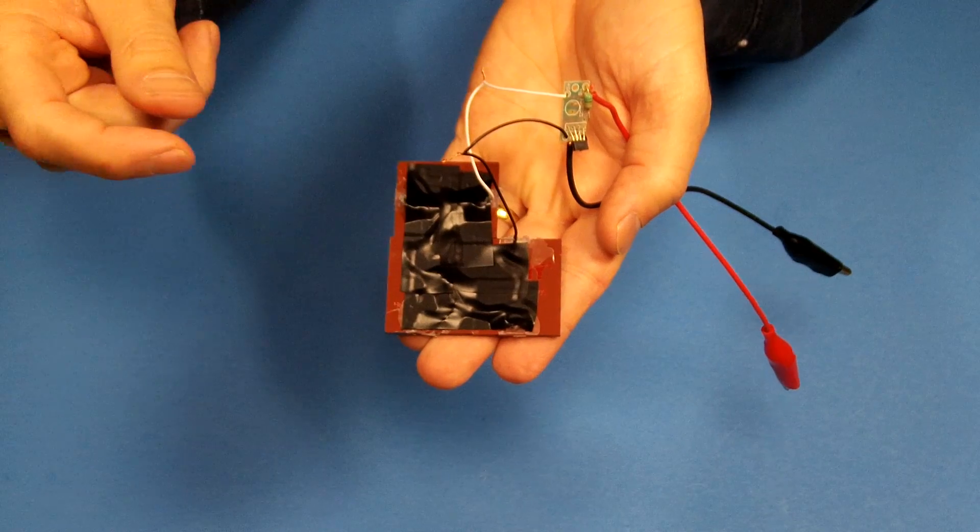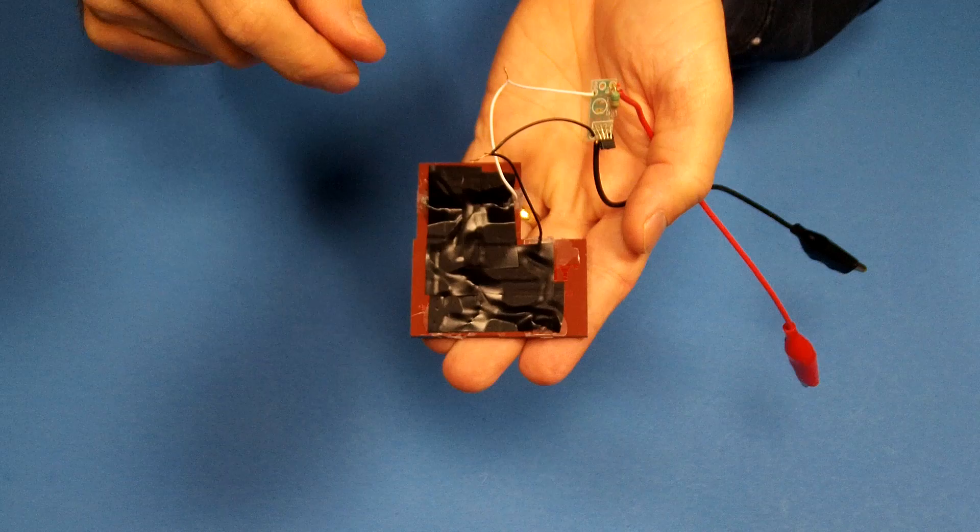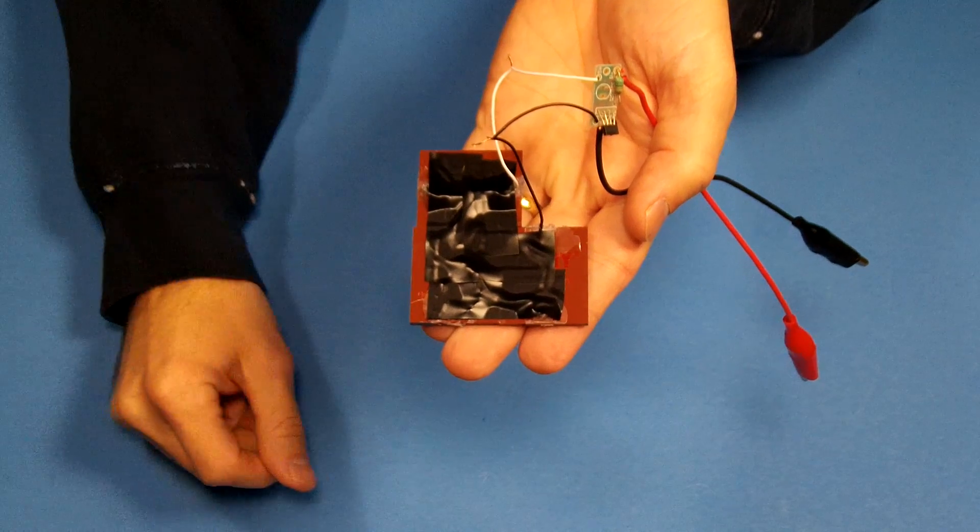Now connect your black negative wires together. Connect your white positive wires together. Solder them and wrap them in black tape.